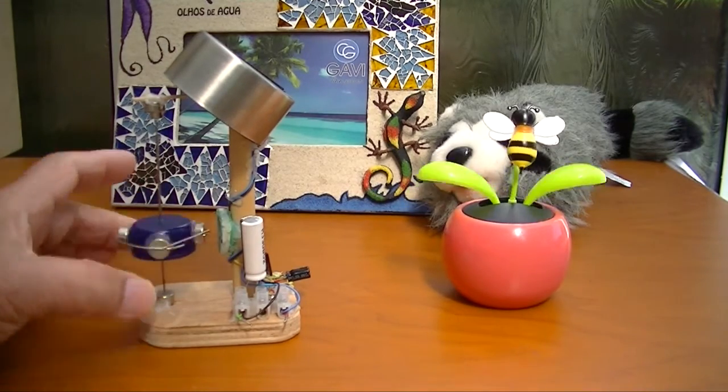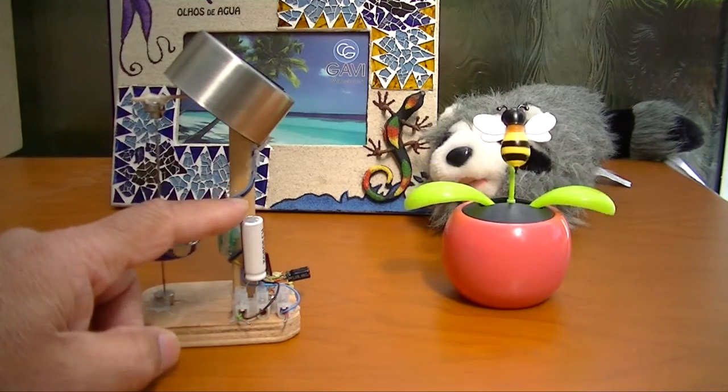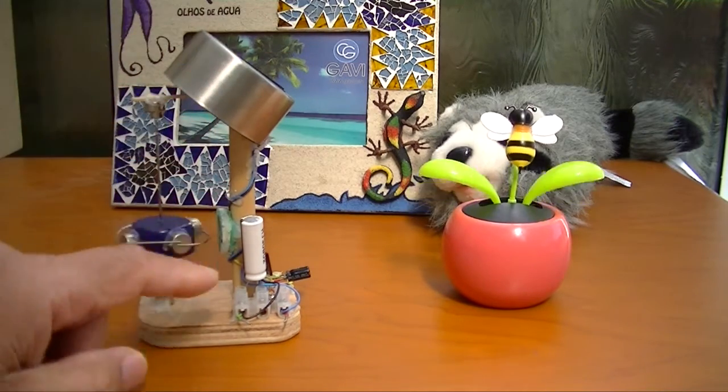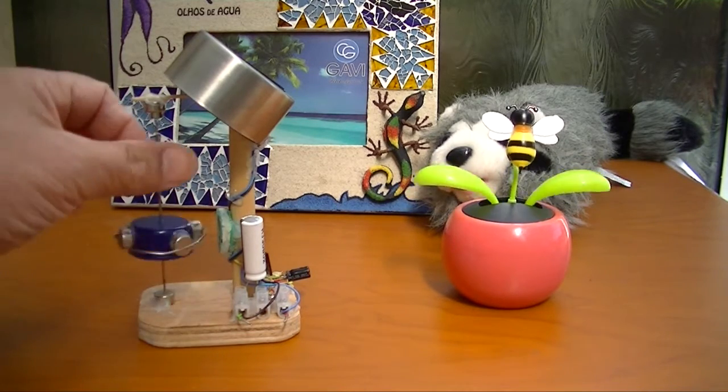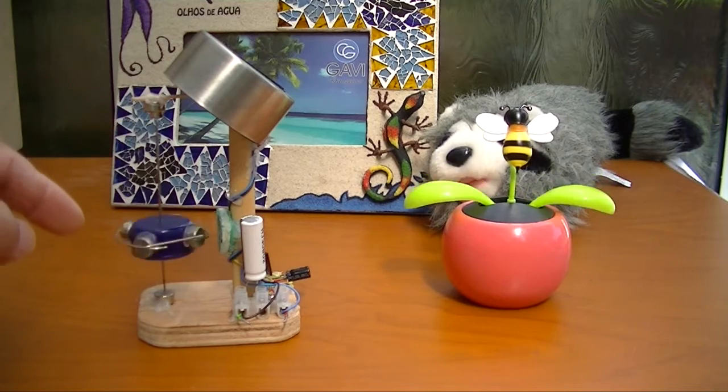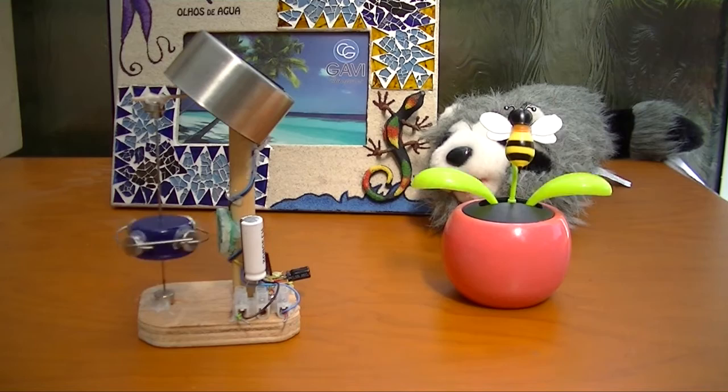When I put the capacitor on and left it on all day, if the sun was very hot this would charge up. At nighttime when there's no more charge going through, this capacitor would discharge and this would really spin fast at night. It will go on for about four or five hours depending on how hot the sun has been during the day.